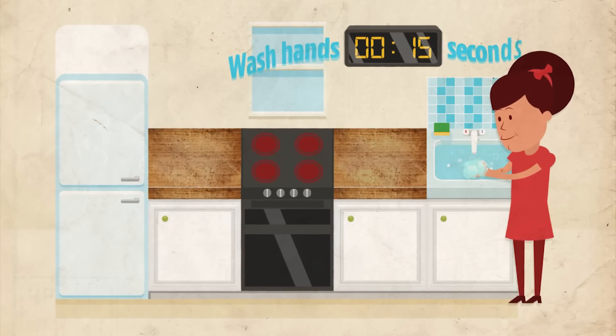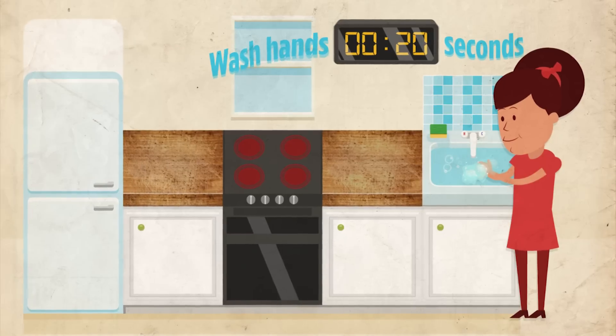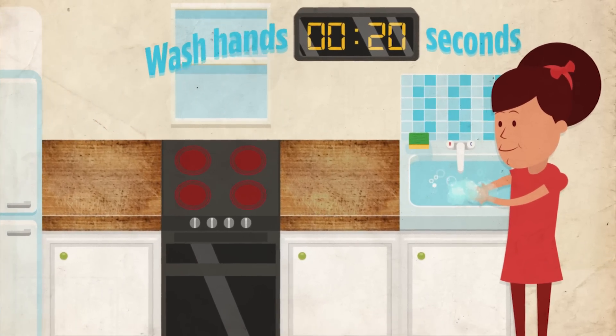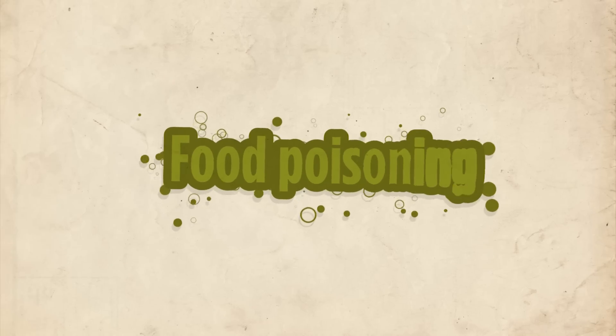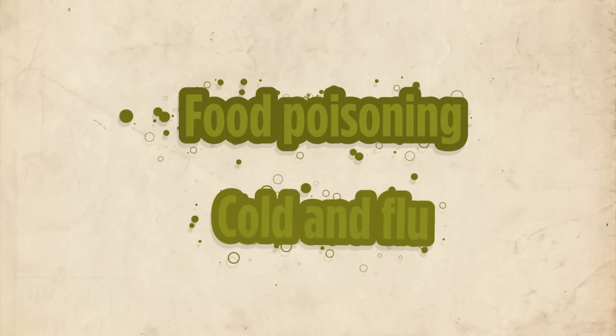Wash hands for at least 20 seconds with warm soapy water. Be sure to scrub the backs of your hands, between your fingers, and under your nails. Proper hand washing may eliminate nearly half of all cases of food poisoning and significantly reduce the spread of the common cold and flu.